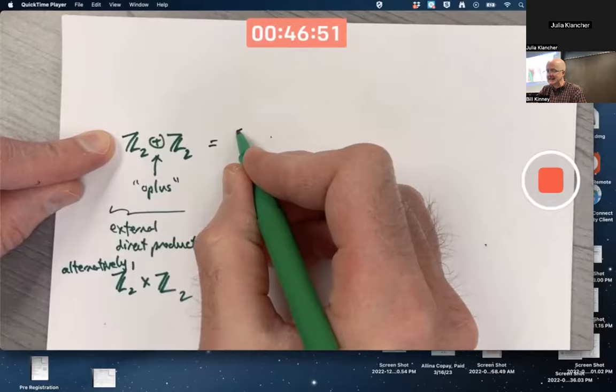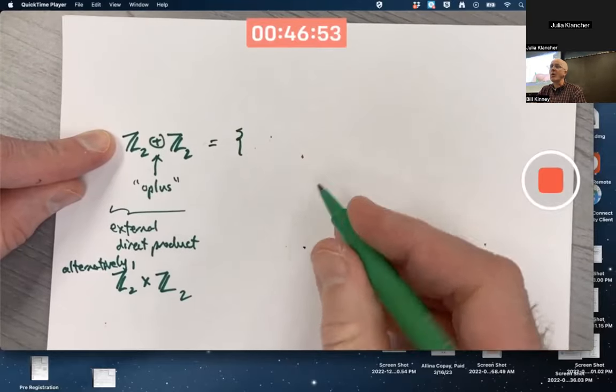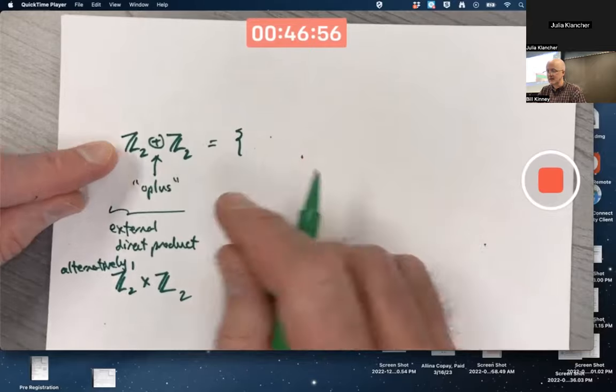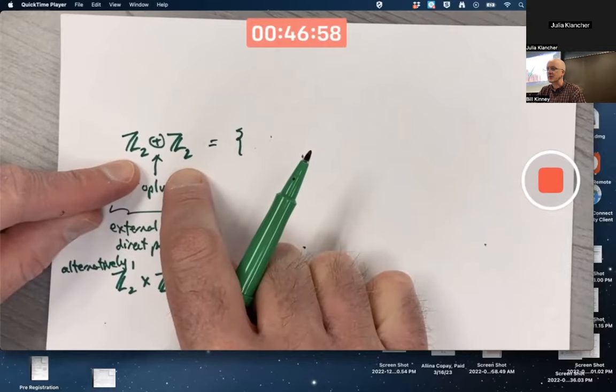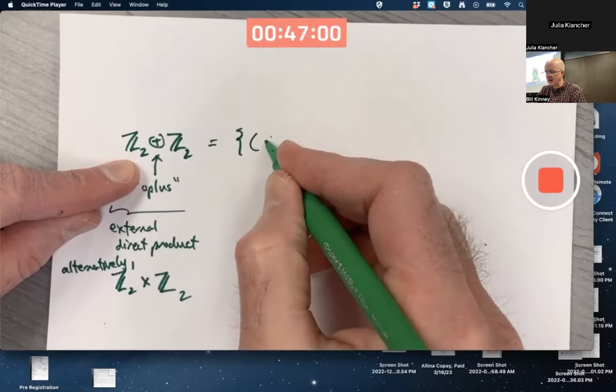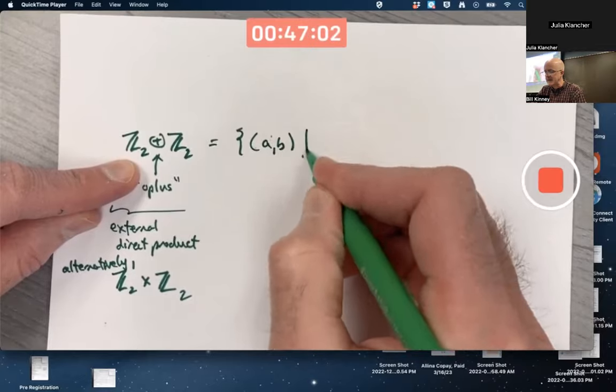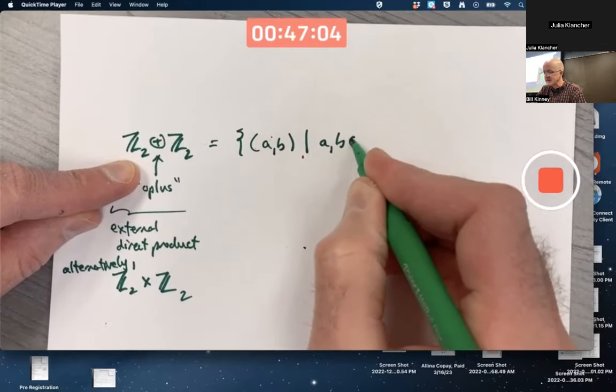As a set, it's the set of all ordered pairs of elements from these groups. In this particular case, ordered pairs (a,b), where a and b are elements of Z2.